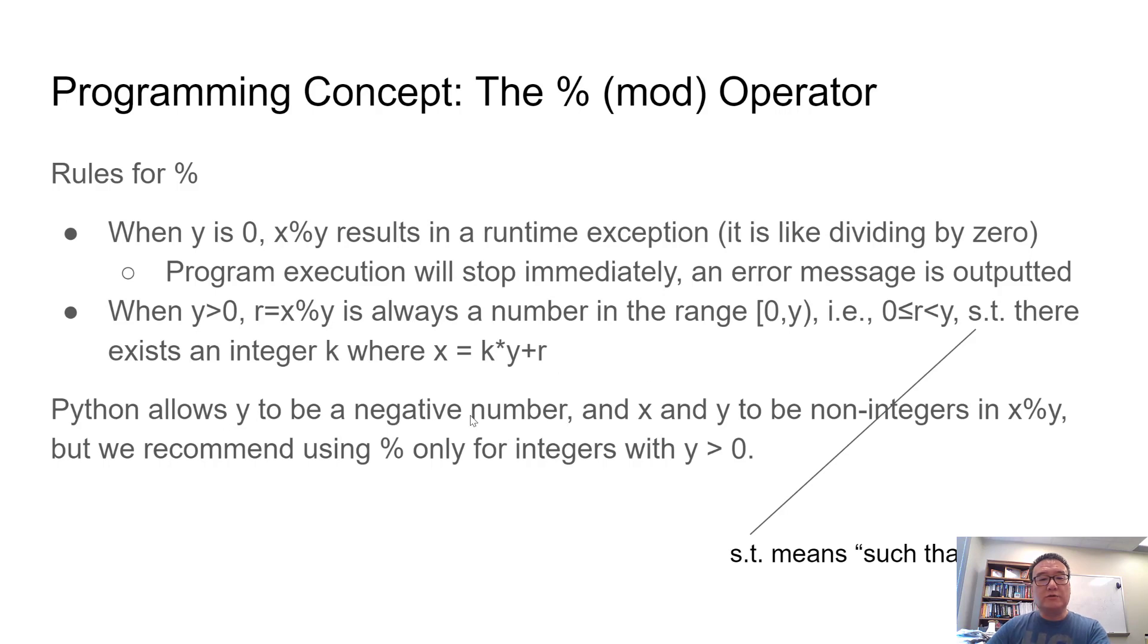Python actually also allows y to be a negative number. And in fact, it allows either or both of x and y to be non-integers. You can use, say, 1.5. You can do 12.5 mod 5.5. And if you are curious, you can figure out what those values are and try to figure out what are the rules behind that, why that makes sense. But we recommend using the percent only for integers, integer value y and only when y is greater than 0.